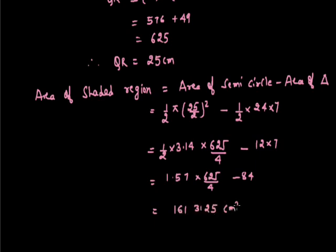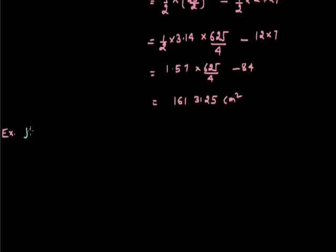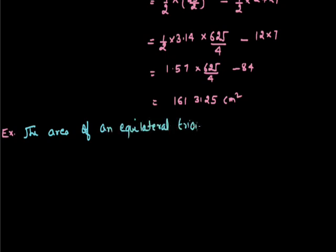So this is the area of the semicircle. Next problem: the area of an equilateral triangle is 49 root 3 centimetres squared.